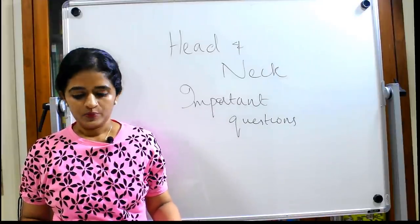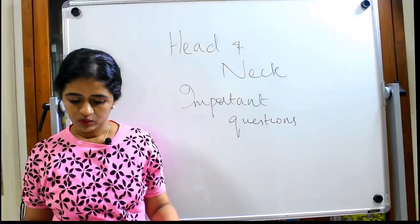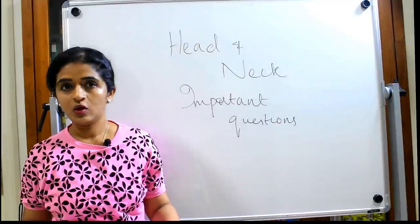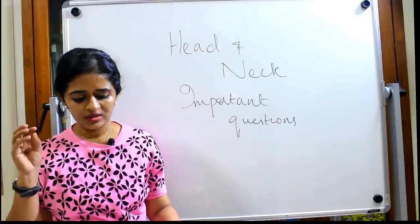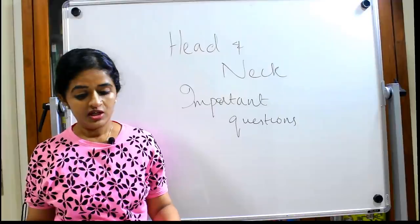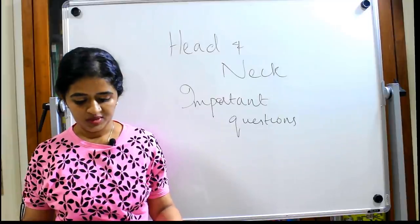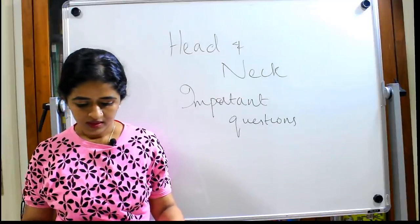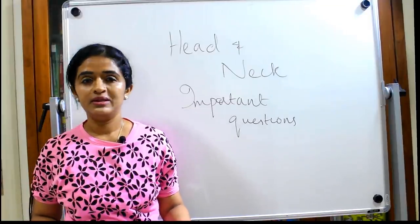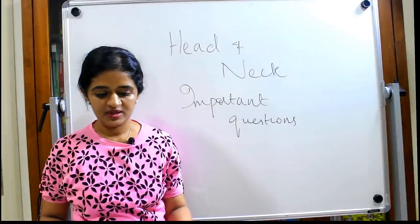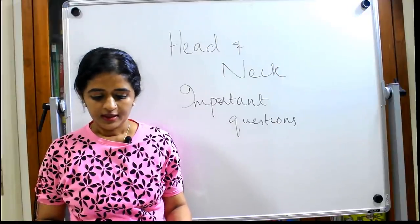Starting from chapter 2, it is mainly osteology. For the theory part you need not mug up too much on the osteology portion except for some important landmarks like pterion — that is a favorite short question. You should also know the differences between the male and female skull, as you might get questions from that due to the new pattern of MCI.